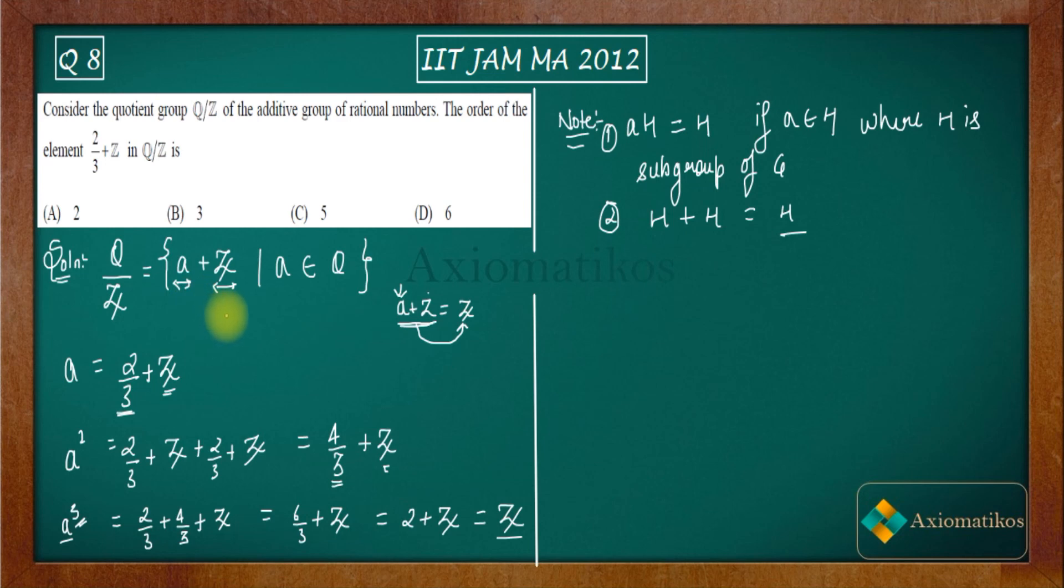So you see how we can obtain the order for this element of Q/Z. Q/Z is a group which consists of this kind of element. Now if a is zero then you will get your identity element. Also, if a is an integer then you will again get your identity element. So using this property, if you know this group very well, then you know that the identity for a quotient group is this group which is written here. So this is how we can do this question. Thank you.